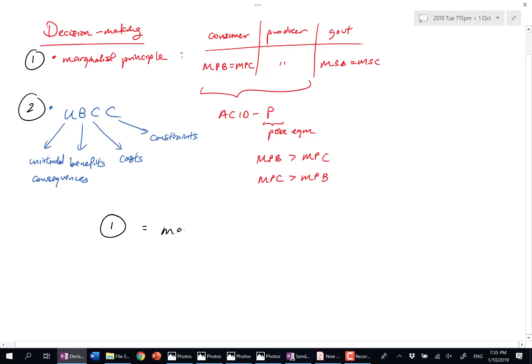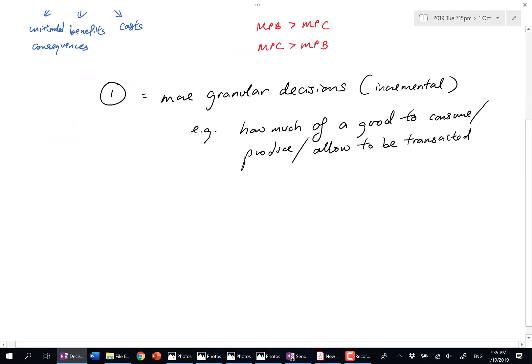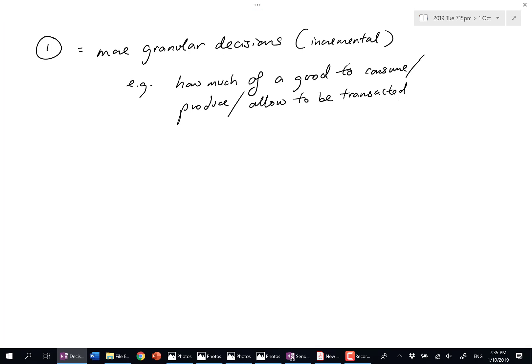One is for more granular decisions. When I say more granular, I'm also saying it's more incremental. It's not a once-off. Examples: How much of a good to consume? How much of a good to produce? How much of a good to allow to be transacted? Of course, the third one is from a government's perspective. The government is the one that comes in to say, this is allowed or this is not allowed.